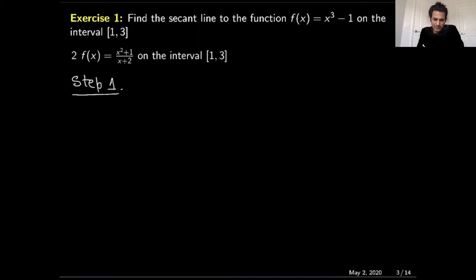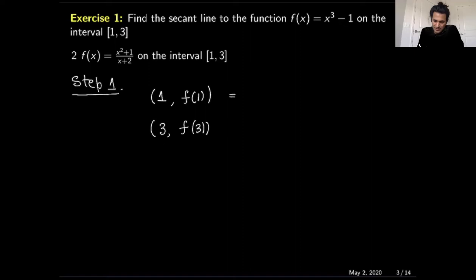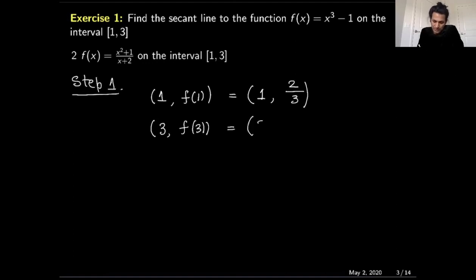In step number one, we calculate the points where the line passes through. The x-values are one and three. I will plug each x-value into the function to calculate the y-values. When I plug in x=1, I get (1+1)/(1+2) = 2/3.